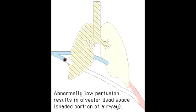What is the mnemonic to help you remember this equation? Just remember: taco, paco, peco, paco. This refers to the order of variables in the equation: tidal volume (taco), arterial PCO2 (paco), expired PCO2 (peco), and arterial PCO2 again (paco).